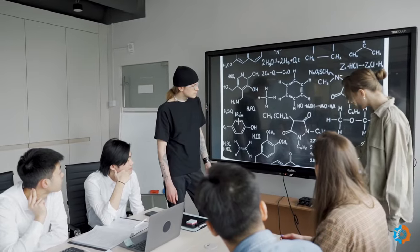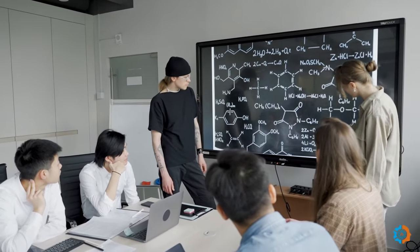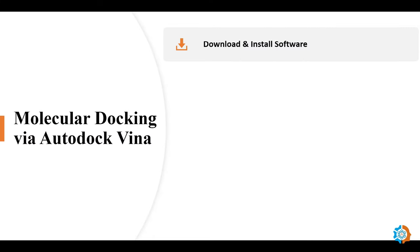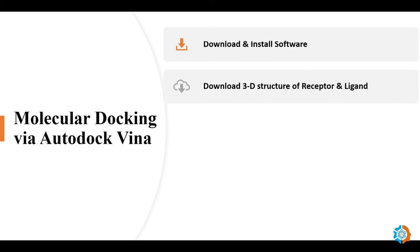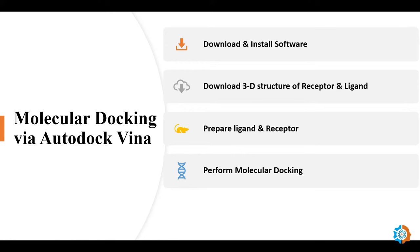Today in this video I will show you how we can use molecular docking via AutoDock Vina. In this workflow, first we will download and install three software: UCSF Chimera, AutoDock Tools (MGL Tools), and AutoDock Vina. After that we will download 3D structures of the receptor and ligand from different databases, prepare both structures for molecular docking, perform the docking, and finally analyze the results. I will show you each and every step with a live example.